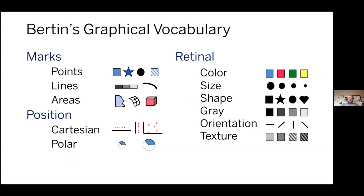There are three basic kinds of marks: points, lines, and areas. Position is super useful — there are two kinds of position for encoding data: Cartesian and polar. Then there are what Bertin called retinal properties: color, size, shape, gray level, orientation, and texture. All of these six — perceptual psychologists tell us — have machinery in our visual cortex for processing them really quickly. So they're really useful for working with data.